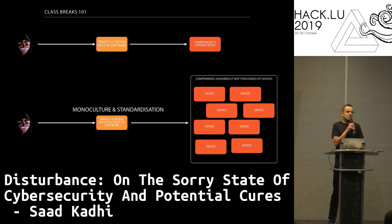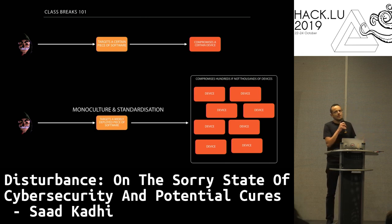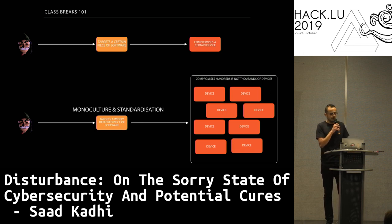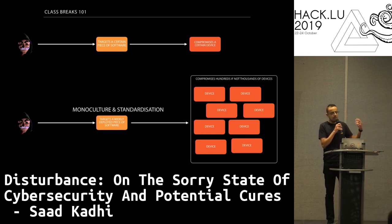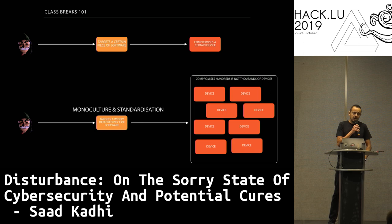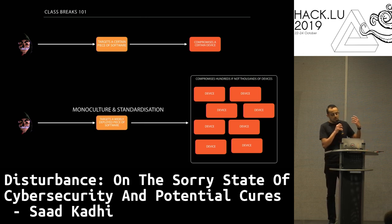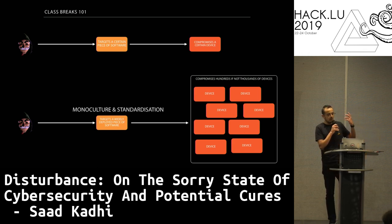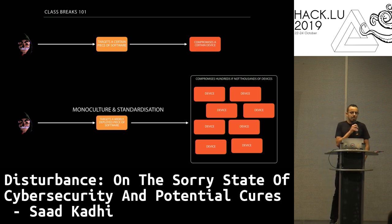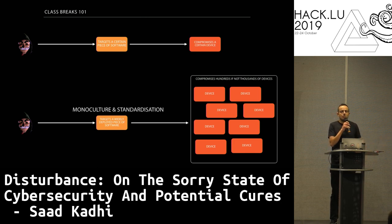Class breaks 101 — this term was coined by Bruce Schneier back in 2003 in his book 'Beyond Fear.' You get the idea quickly: an attacker targets a certain piece of software and compromises a certain device. In a class break, they target a widely deployed piece of software — due to monoculture and standardization — and end up compromising hundreds, if not thousands, of devices at once. Can anybody think of a widely deployed piece of software that could be compromised?